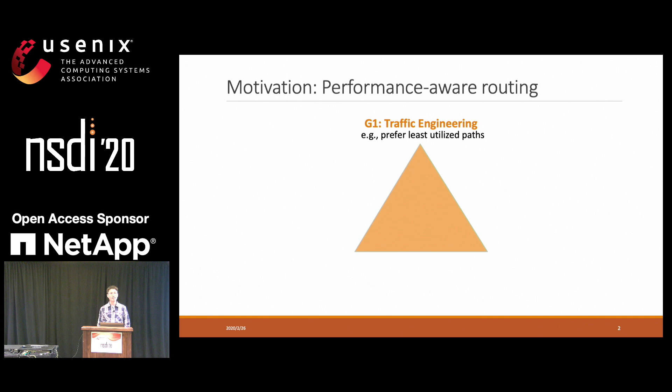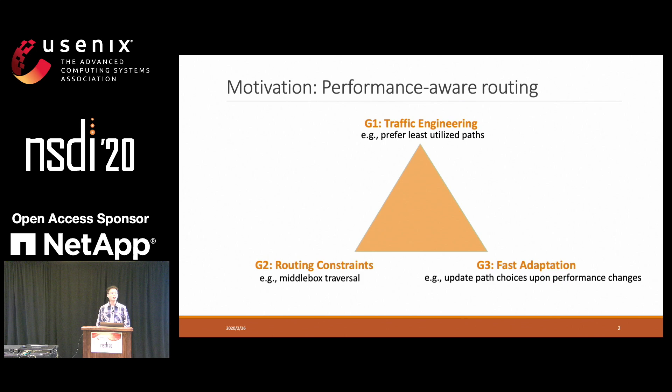Second, sometimes we may want to prefer certain types of routes, and therefore we need to support routing constraints. For example, we may want to route traffic through a series of middleboxes before they reach the destination. Third, the network conditions can change very fast, so we also need to adapt very fast. For example, we may want to update path choices as soon as possible after network conditions change.